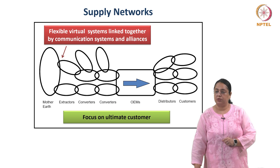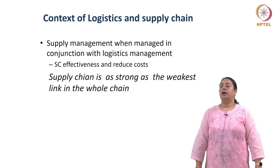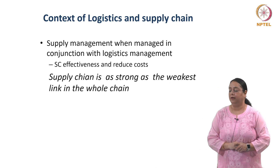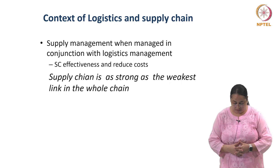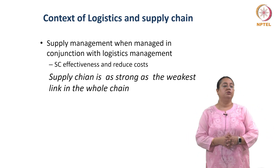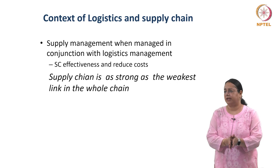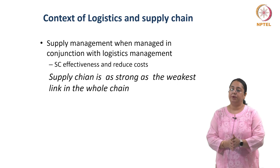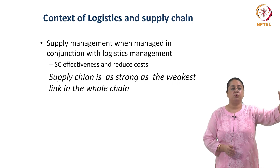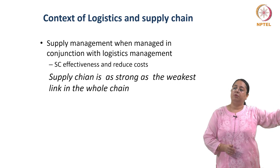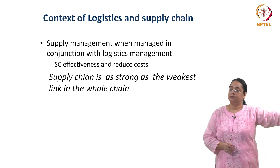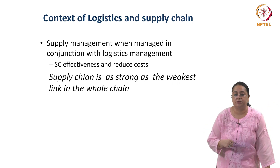Every entity in the supply chain must focus on the ultimate customer. The lens of supply chain is important because it is very well said: the supply chain is only as strong as its weakest link. So if I am a company manufacturing or converting anything, I am dependent on tier 1 — my immediate supplier — tier 2 — the supplier to tier 1 — and so on. If even one entity fails, it would have a ripple effect.